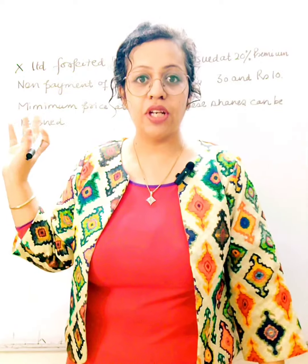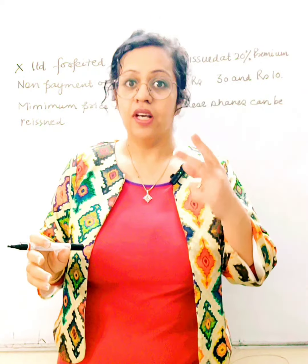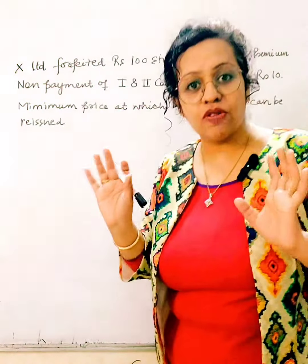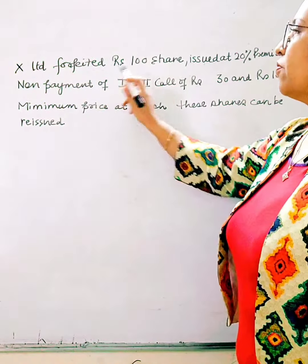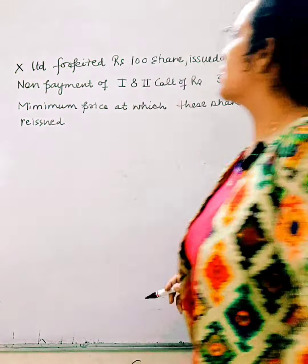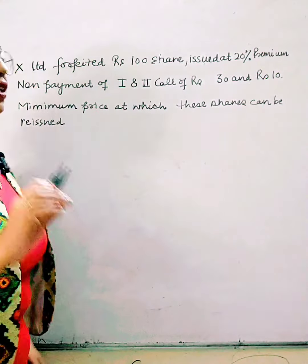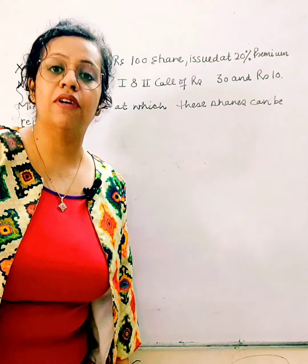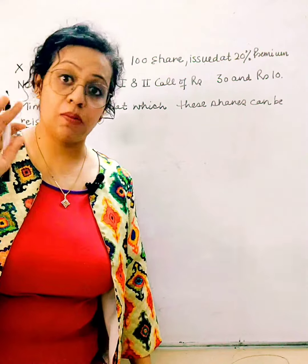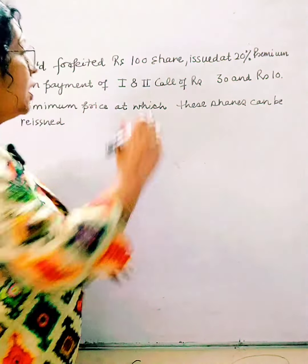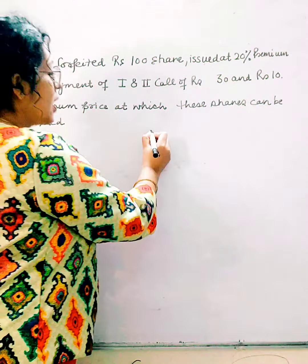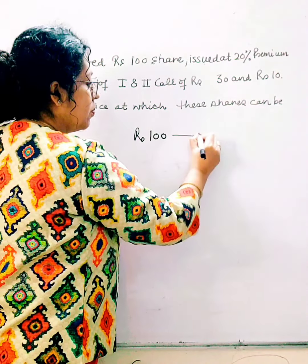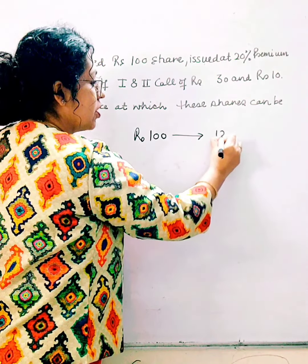I have two questions here that I am going to discuss. This is the issue of shares. A forfeited share has a face value of 100 rupees. The shares were issued at a 20% premium, that is, issued at 120 rupees.